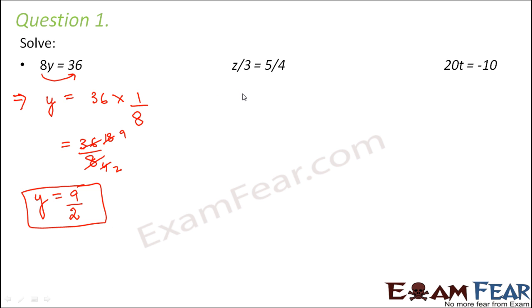The next one is z by 3 equals 5 by 4. Here also we will try to move 3 to this side. Here it was divided by, so this side it will become multiplied by 3. So this becomes 15 by 4. So z equals 15 by 4 would be the solution.